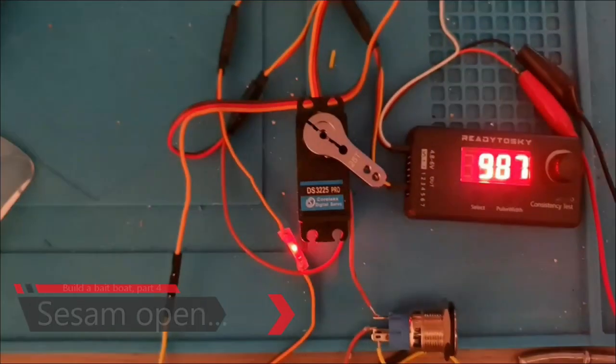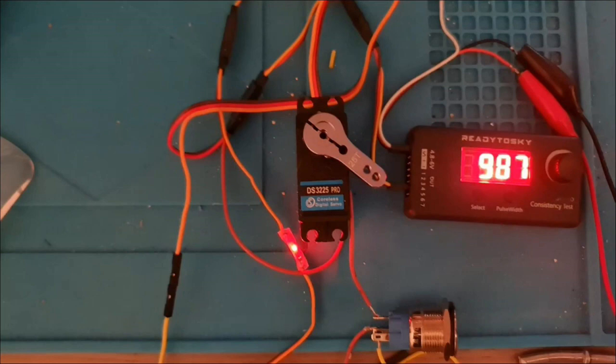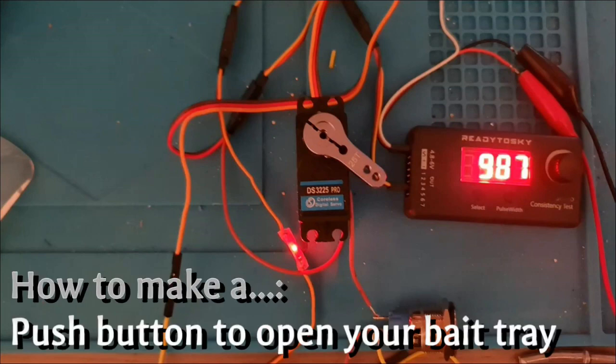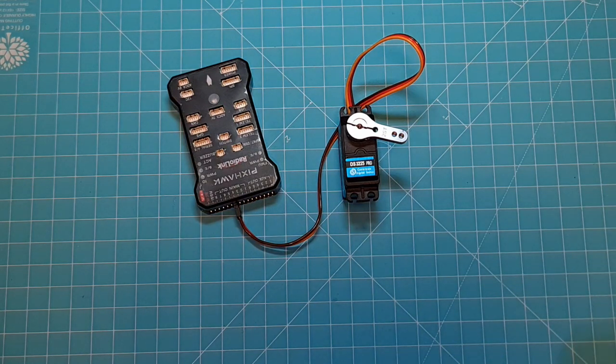Have you ever been on your knees behind the boat and wanted to put the hook and lead inside the bait tray, only to discover that your remote is on your chair or your tablet is far away? Wouldn't it be great if you had a button behind that boat so you can just push it and the bait tray opened anyway? Well, let's see how we can make such a solution.